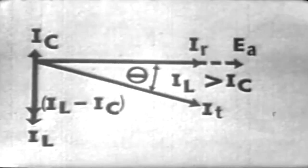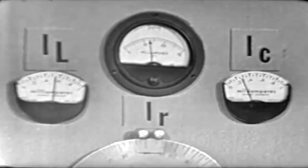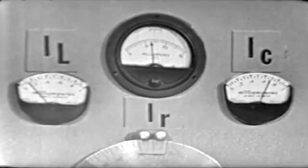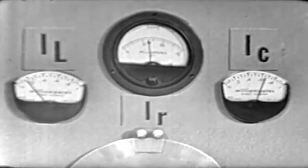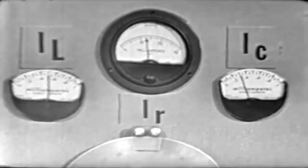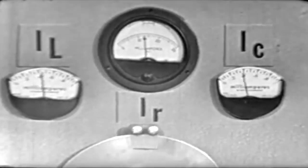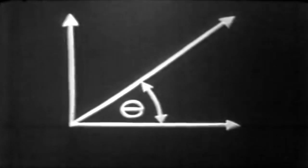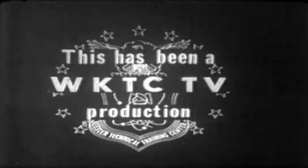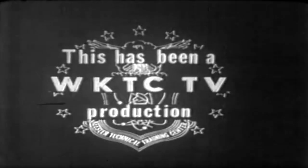So it is this action, by changing the frequency applied to the circuit, that causes IC to increase and IL to decrease. By decreasing frequency, the reverse takes place. But note the position of IR as I increase and decrease frequency, IR remains the same, and the circuit either acts capacitively or inductively.